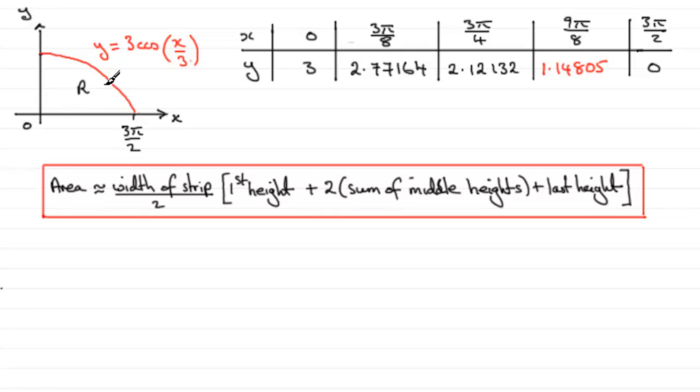We split this up into strips of equal width and the area is approximately the width of a strip divided by two, half the width of a strip, all multiplied by the first height plus twice the sum of the middle heights plus the last height.